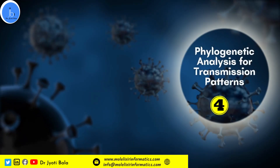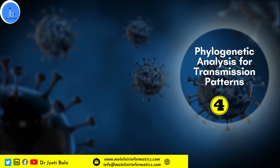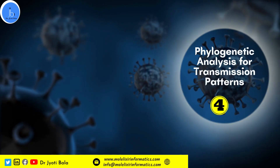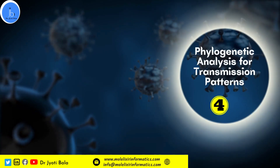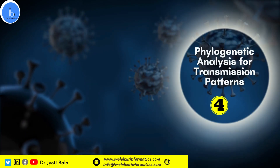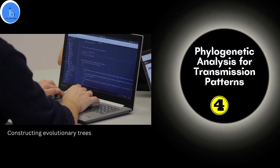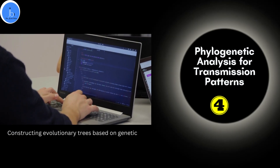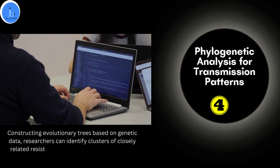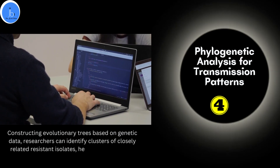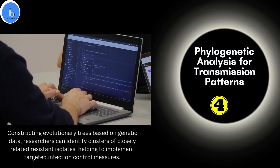The fourth area is phylogenetic analysis of transmission patterns. Phylogenetic methods in bioinformatics help in tracing the transmission routes of AMR strains in hospitals and communities. By constructing evolutionary trees based on genetic data, researchers can identify clusters of closely related resistant isolates, helping to implement targeted infection control measures.